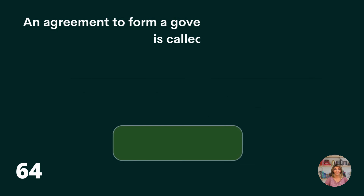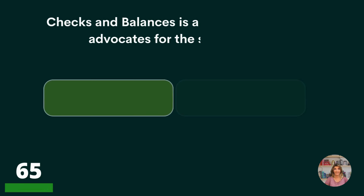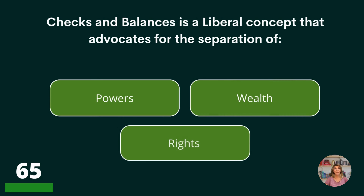An agreement to form a government to protect rights is called a constitutional pact, rights accord, or social contract? Social contract.